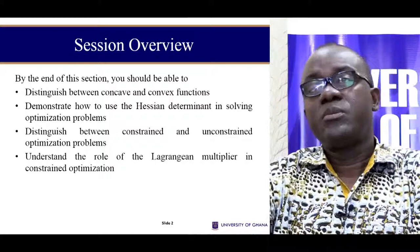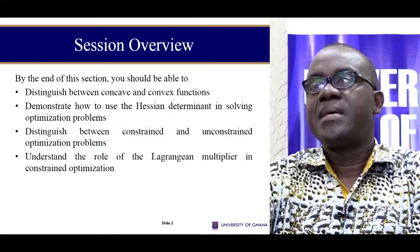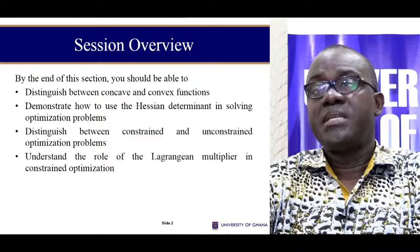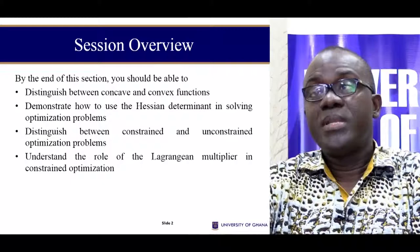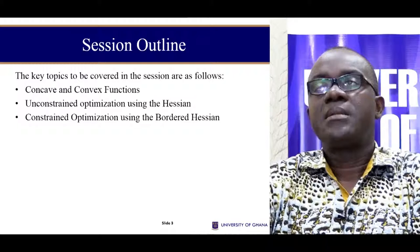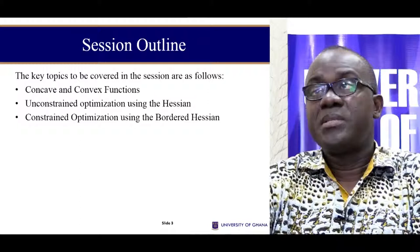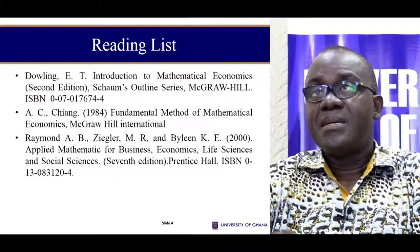In this section, what we're going to learn is to be able to distinguish between concave and convex functions, understand what the Hessian determinant is, and also understand how this Hessian determinant is used to solve constrained optimization. We also look at situations where we have unconstrained optimization where the Lagrangian multiplier would be used. The outline is that we look at concave functions, unconstrained optimization using the Hessian, and then constrained optimization using the bordered Hessian.